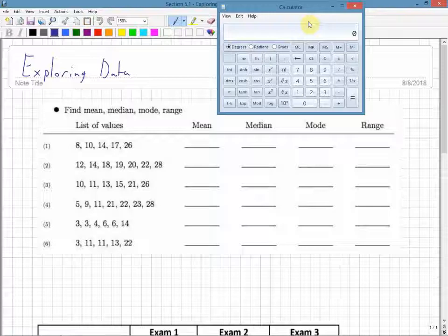Here I have a list of values. I have six different data sets. For the first one, I have listed 8, 10, 14, 17, and 26.